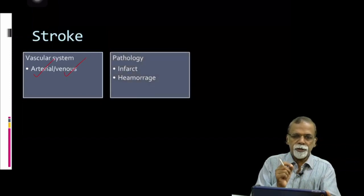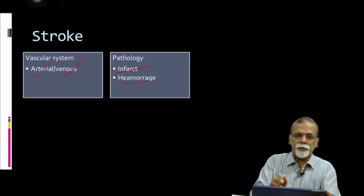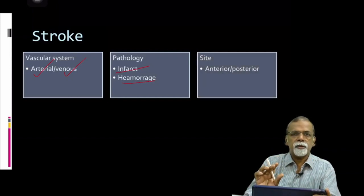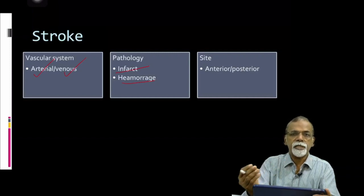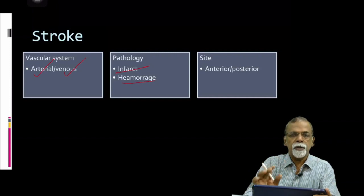Then depending upon the pathology, we divide stroke into whether it is ischemia leading to infarct, or it is bleeding in the brain — that is hemorrhage. So pathologically the classification is ischemic stroke versus hemorrhagic stroke. Stroke, as already mentioned, is a vascular disease, so we classify depending upon which vascular territory is affected — stroke can be in the vascular territory of the anterior circulation or the posterior circulation, which consists of the vertebrobasilar system.